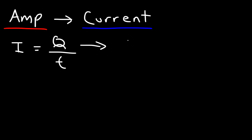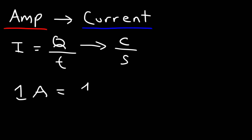The unit of charge is coulombs, the unit for time is seconds, and the unit for current is amps. So one amp represents the flow of one coulomb of charge per second.